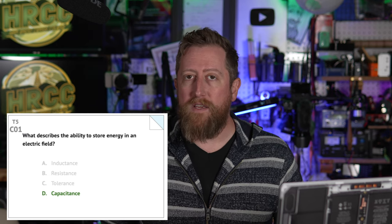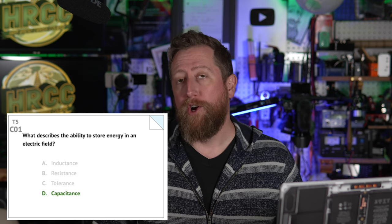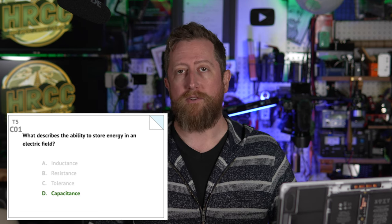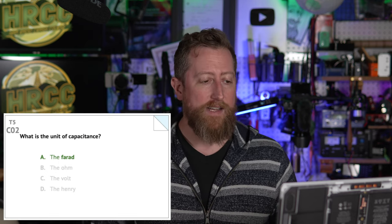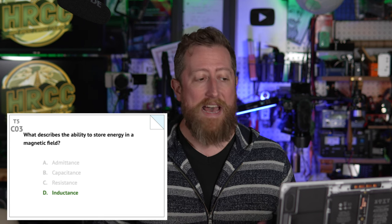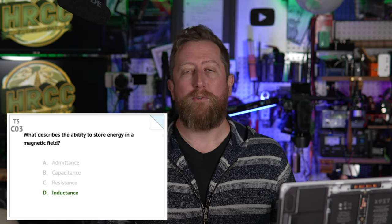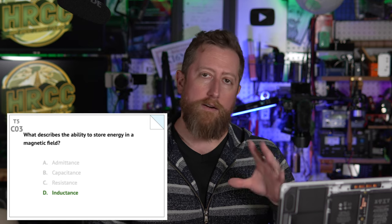Section C, Question 1: what describes the ability to store energy in an electrical field? And that is capacitance. If you think of a capacitor, what is it doing? It's temporarily, at least under load, storing electrical energy. Charlie 02: what is the unit of capacitance? The answer is the farad. Charlie 03: what describes the ability to store energy in a magnetic field? And that is inductance. The component associated with inductance is an inductor, which is generally like a coil of wire.